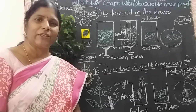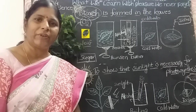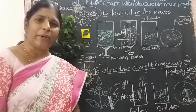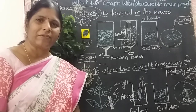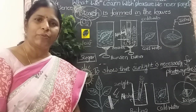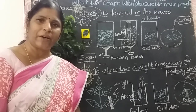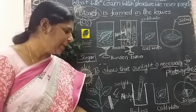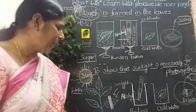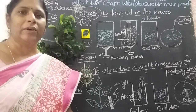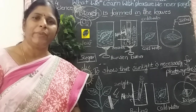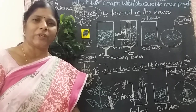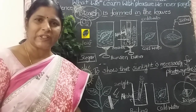Leaves prepare food for the plant. That's why it is also called the kitchen or food factory of a plant. All green plants make their own food by the process of photosynthesis.